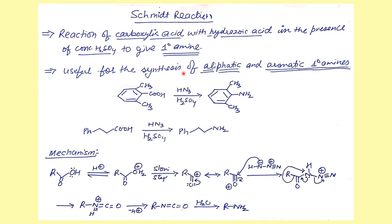The Schmidt reaction involves treating a carboxylic acid with hydrazoic acid (HN3) in the presence of concentrated sulfuric acid to give a primary amine. This is a one-step acid-to-amine conversion. However, this reaction is generally not recommended in organic chemistry because both hydrazoic acid and concentrated sulfuric acid are harsh and hazardous reagents.